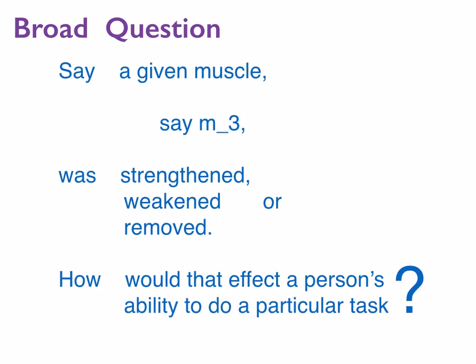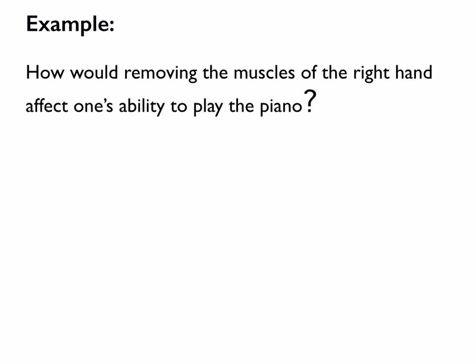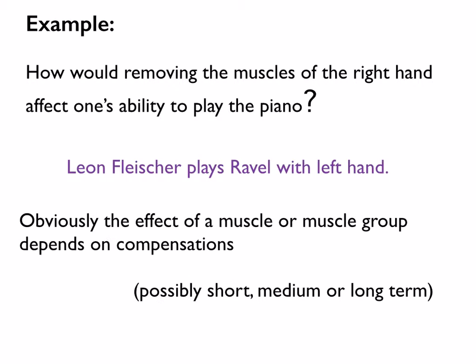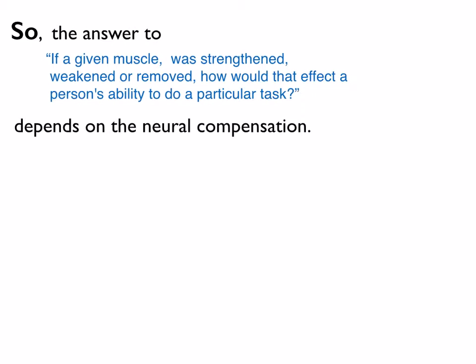So the big question is: given a muscle—whatever one you want, let's say it's strengthened, weakened, or removed—how does that affect your ability to do a given task? For example, if you remove the muscles of your right hand, how would that affect your ability to play the piano? Here's Leon Fleischer playing with his left hand. With compensation, you can do pretty well playing with just your left hand. So the answer depends on compensation, and that might be a key issue in trying to understand this question.